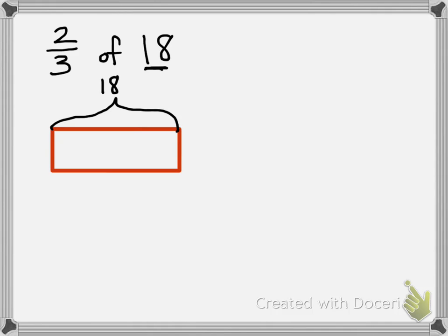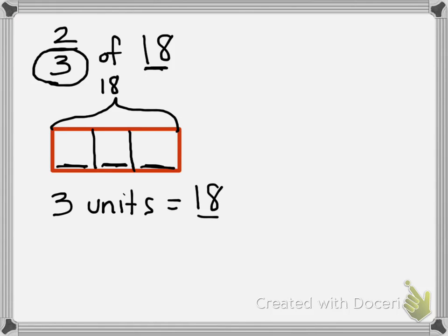So we're going to put 18 on top of our tape diagram, and we're going to look back at our denominator to tell how many parts we're partitioning our tape diagram into. So this is telling me that I need to partition it into three equal parts. So again, if we count them, 1, 2, 3, we know that three units equal our total of 18, our whole number 18.